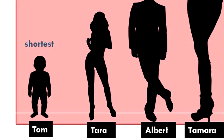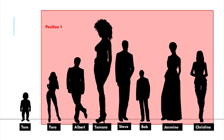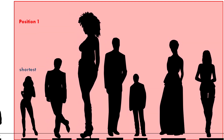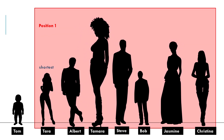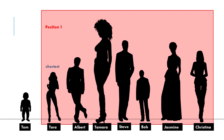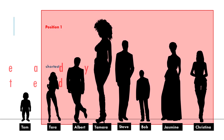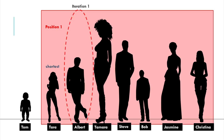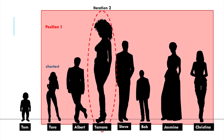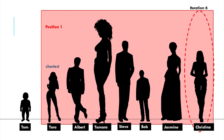Now let's begin at position 1 — Tara. She will be assigned as the current shortest person. Note how our red search space has excluded position 0, because we already know that position 0 has the shortest person. Now we are ready to do our iterations and comparisons. At iteration 1, is Albert shorter than Tara? No. Similarly, iterations 2, 3, 4, 5, and 6 — none of the others are shorter than Tara. Thus, no swap is necessary. Tara belongs to position 1.